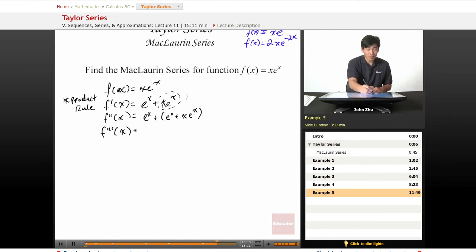And f three prime of x equals, well, same thing again, so plus e to the x, plus e to the x, plus derivative of x e to the x, which equals e to the x plus x e to the x. So e to the x plus x e to the x. And so on, until we get a generalized expression.